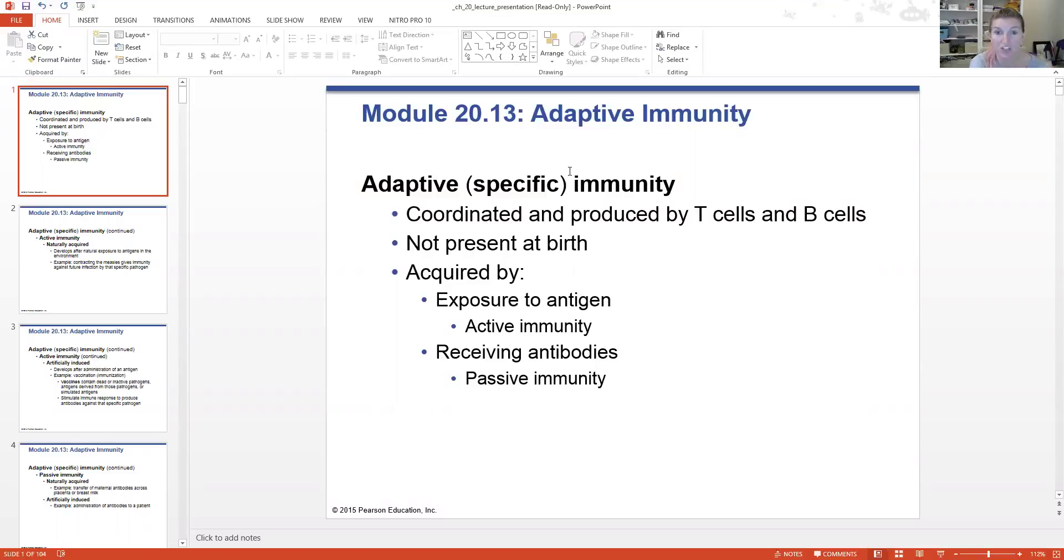So again, we're talking about specific immunity. This is coordinated by the T-cells and the B-cells, those specialized lymphocytes that we mentioned earlier in this chapter. Remember, T-cells are responsible for that cell-to-cell immunity. B-cells are responsible for that antibody-mediated defense. This type of immunity is not something that you're born with. You have to be exposed to the antigens in order to generate this type of immune response.